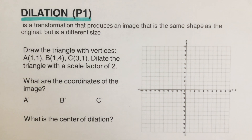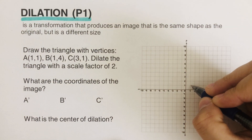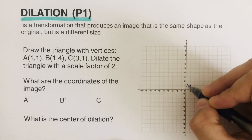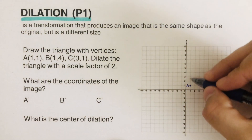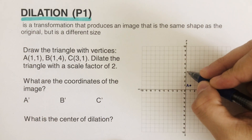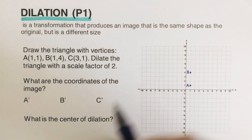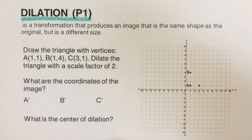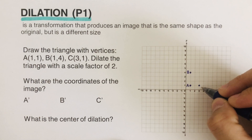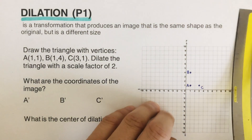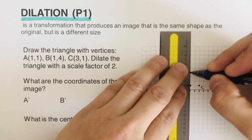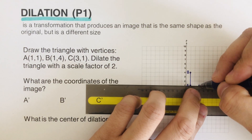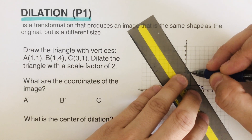Let's take some examples. First, draw the triangle with vertices: A is (1,1), so I go ahead and draw that — I label this as A. Then (1,4) is going to be over here, labeled as B. Then we have (3,1), labeled as vertex C. I'm going to draw the triangle — this is the pre-image.